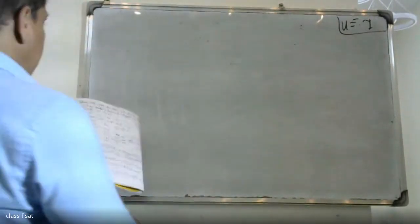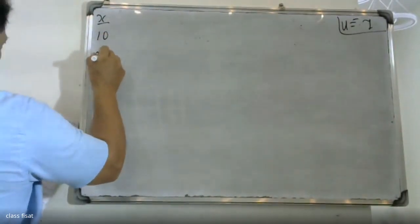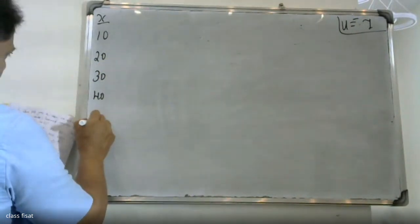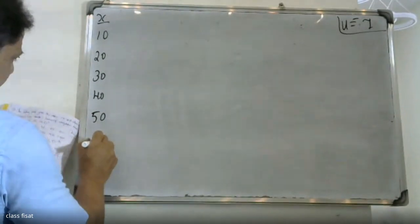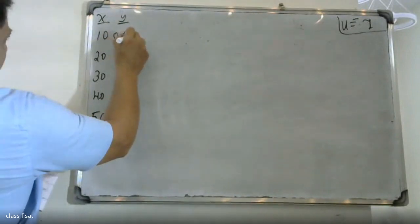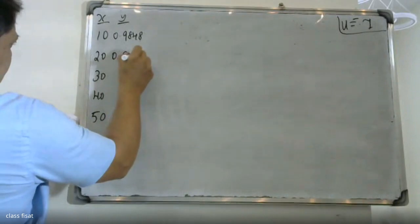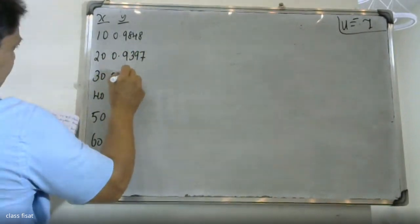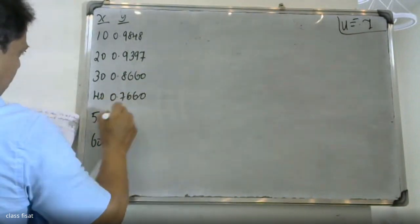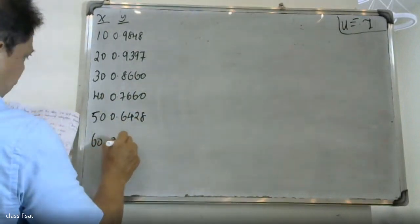The first column of the table has θ values: 10, 20, 30, 40, 50, 60. The corresponding cos(θ) values (y values) are: 0.9848, 0.9397, 0.8660, 0.7660, 0.6428, and 0.5646.